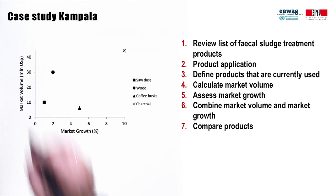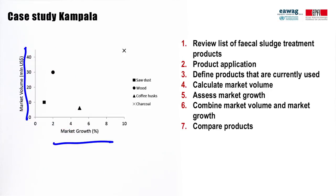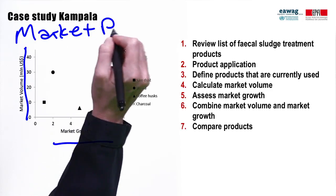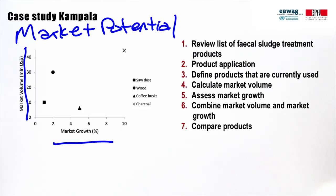In the final steps, we compare the market volume and the market growth for each product. By combining market volume and market growth, we can make a judgment as to which product has the highest market potential or market attractiveness. Each substitute product identified in step 3 is plotted here. The higher the combined market growth and market volume, the greater the market attractiveness. In Kampala, the market for solid fuel is very large and growing rapidly compared to other treatment products, so you could conclude that fecal sludge as a solid fuel has the greatest market attractiveness. Charcoal really stands out, indicating that charcoal as a treatment end product would be a suitable choice.